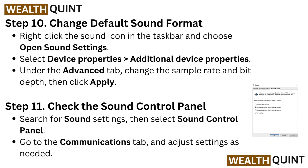Step 10: Change the default sound format. Right-click the sound icon in the taskbar and choose open sound settings. Select device properties, then go to additional device properties. Under the Advanced tab, change the sample rate and bit depth, then click Apply.